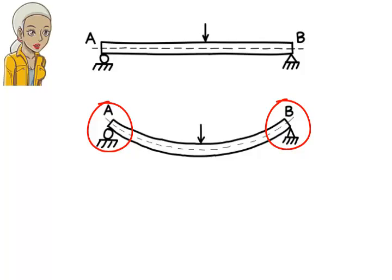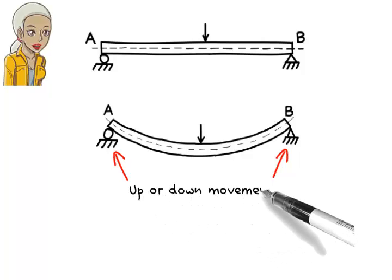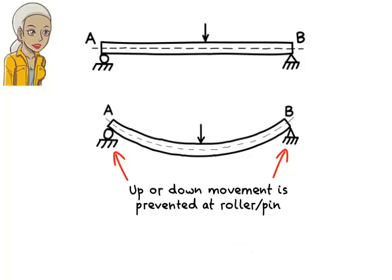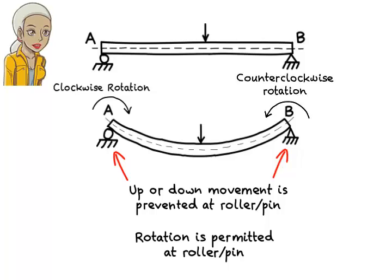How does the support restrict deformation? Let's examine the effect of a pin or roller support on beam deformation. If a beam is resting on a pin or roller, then the support prevents the beam from deflecting at the point of contact — that is, the beam cannot move up or down at that point. However, it can rotate. As you can see here, the beam has no vertical deflection at joints A or B where the supports are located, but both joints have rotated: joint A has rotated clockwise, joint B has rotated counterclockwise. So, a pin connection or a roller connection prevents deflection but allows rotation in beams.